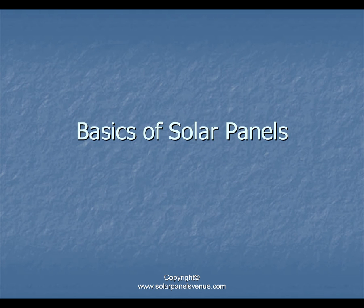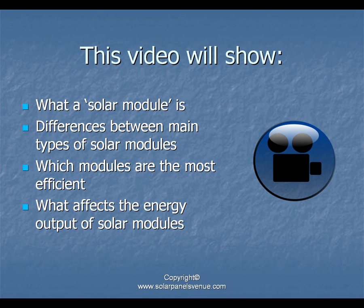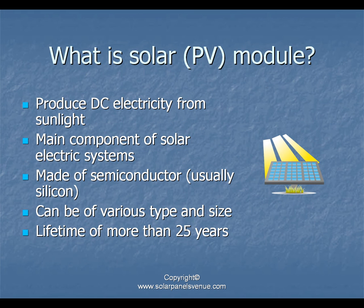This video covers the basics of solar panels: what a solar module is, the differences between main types of solar modules, and which are the most efficient. A photovoltaic or solar module is the main component of any solar electric system, consisting of photovoltaic cells connected together. These cells are made of semiconductor material, usually silicon, which produces electricity when exposed to sunlight — an ability called the photovoltaic effect.